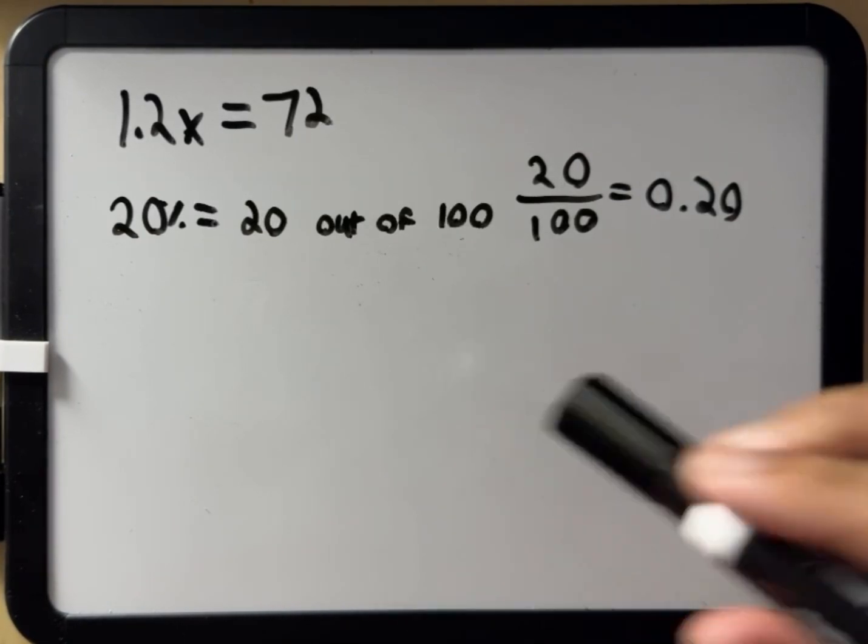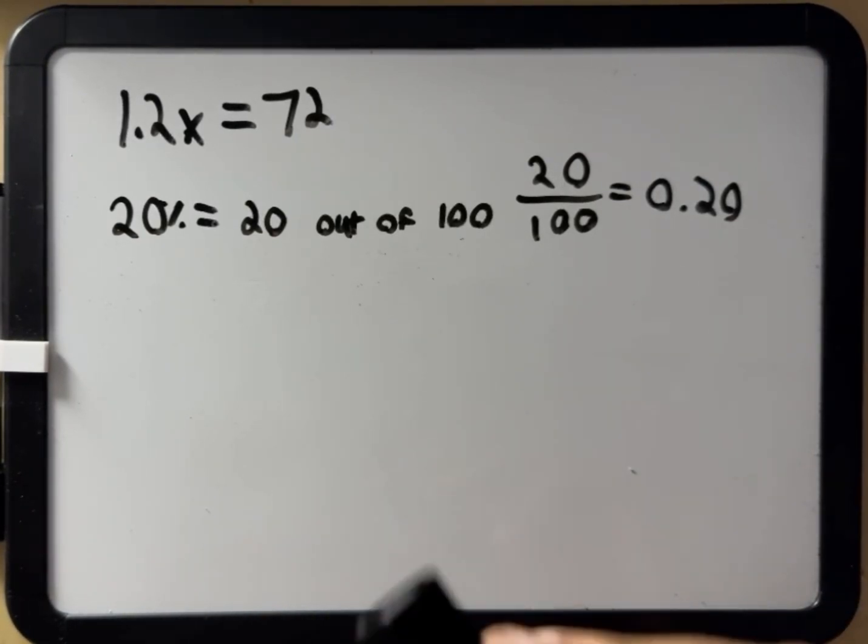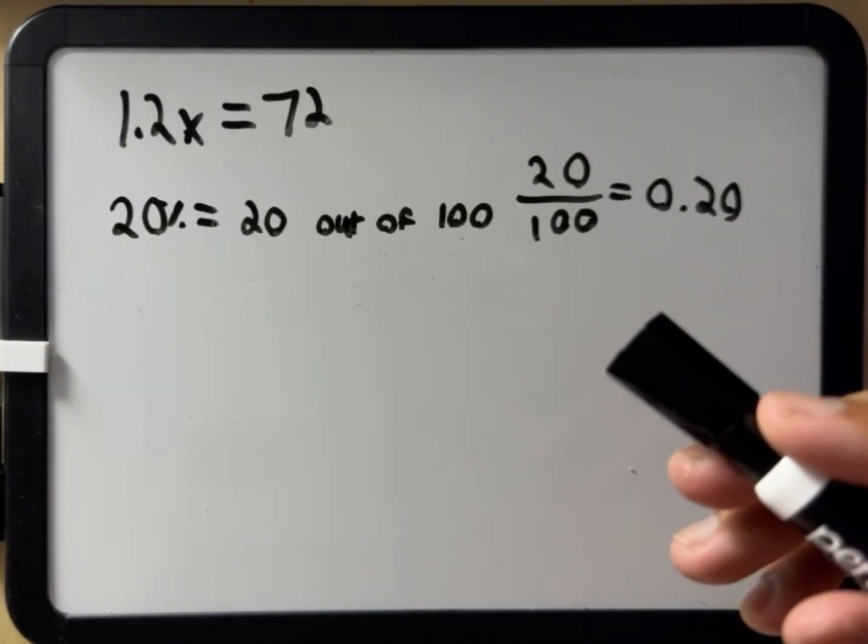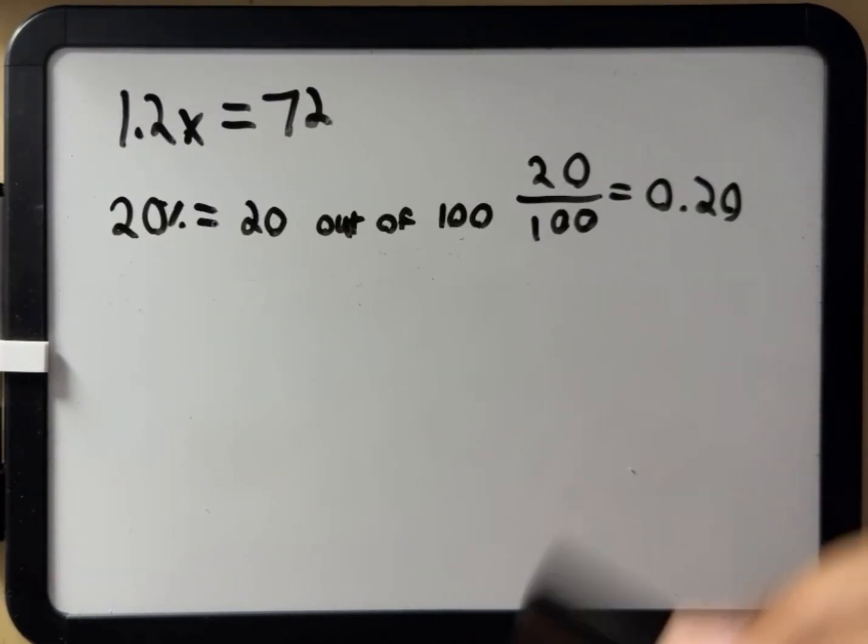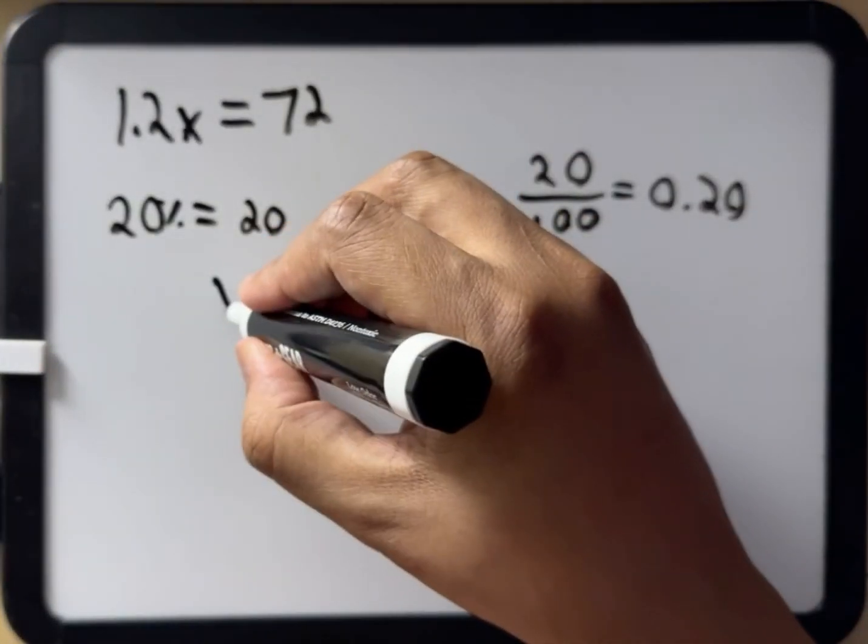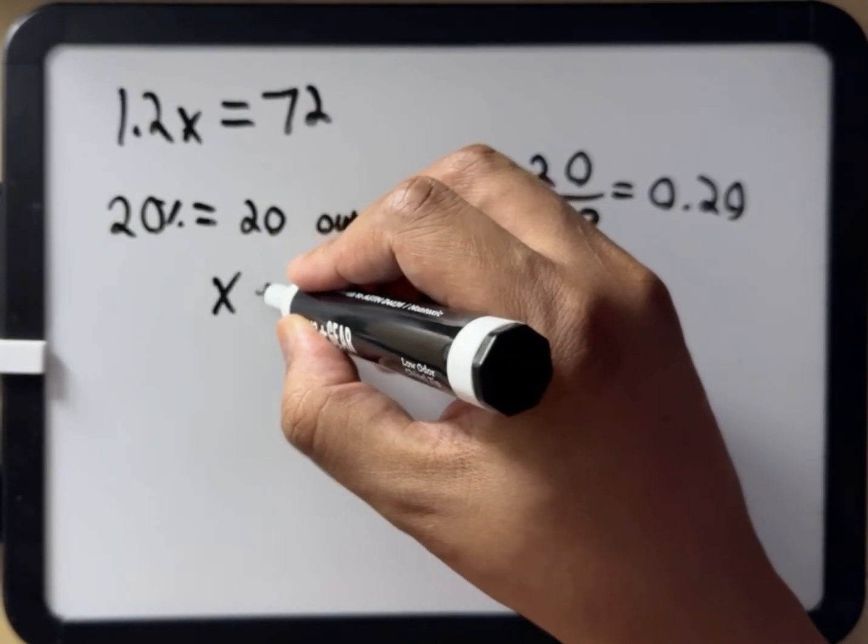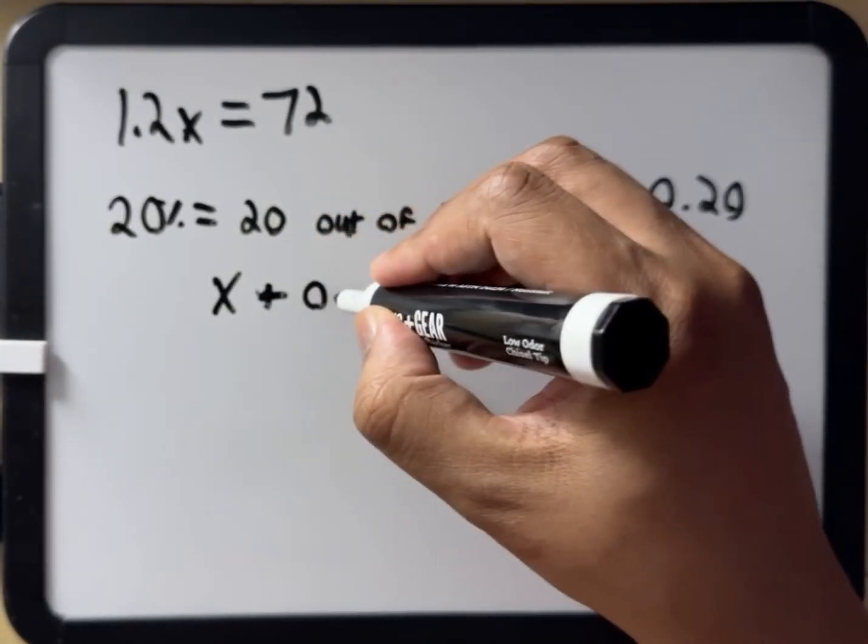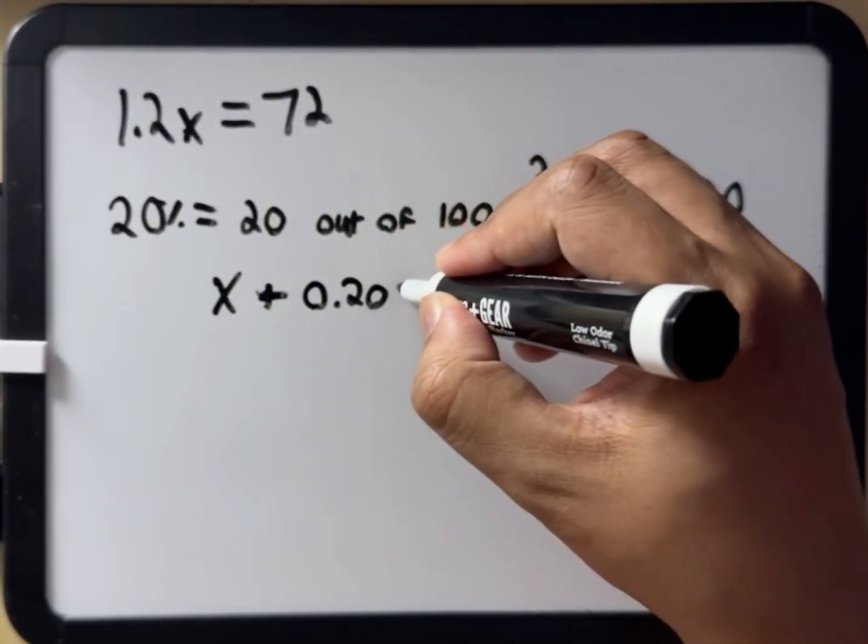Now, what does increase by 20% mean? If you're adding 20% of the number to the number itself, let's say the original number is x, you're adding 20% of x to x, which would look like x plus 0.20x.